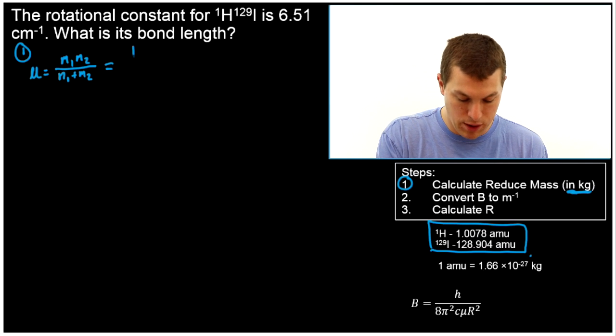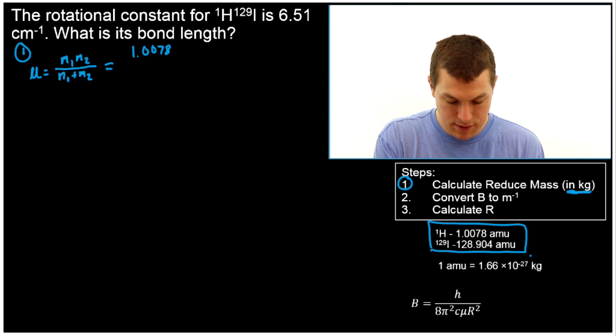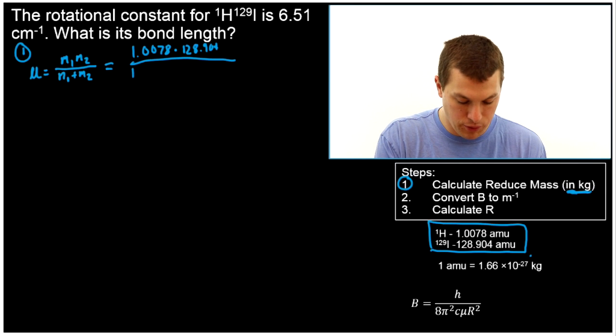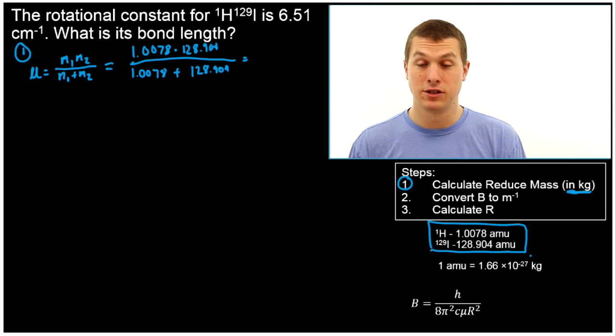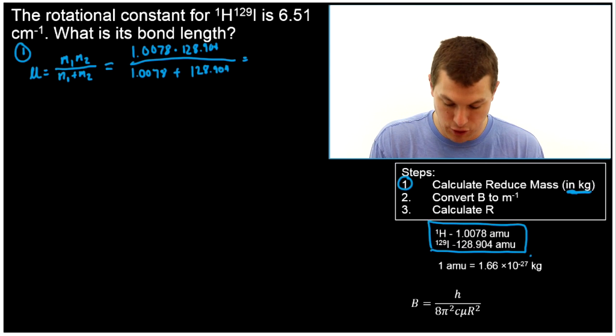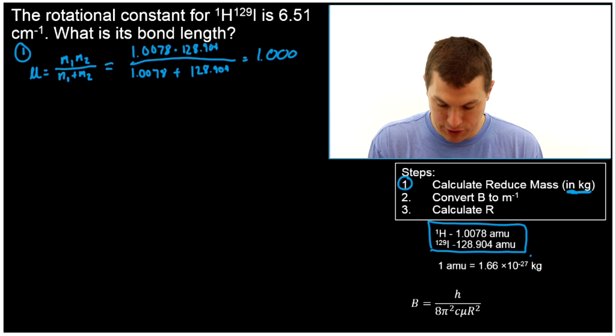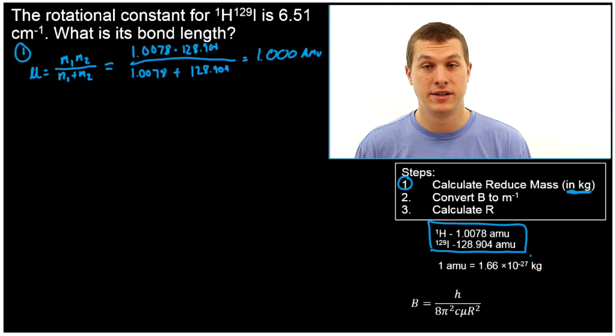So that's going to give me 1.0078 times 128.904 divided by 1.0078 plus 128.904. And this actually will give us almost exactly one. And it's not uncommon to get pretty close to one. This is even closer to one than normal. It's one way out to three decimal places.